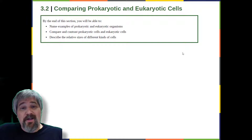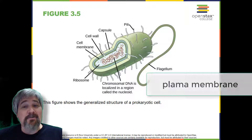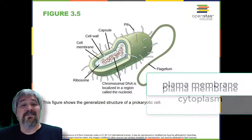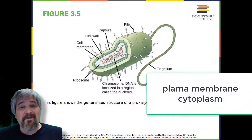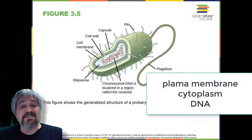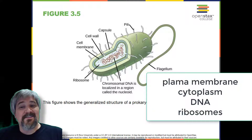Components of Prokaryotic Cells: All cells share four common components. One, a plasma membrane — an outer covering that separates the cell's interior from its surrounding environment. Two, cytoplasm, consisting of a jelly-like region within the cell in which other cellular components are found. Three, DNA, the genetic material of the cell. And four, ribosomes, particles that synthesize proteins.